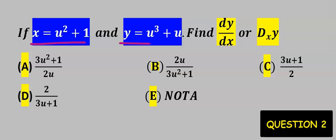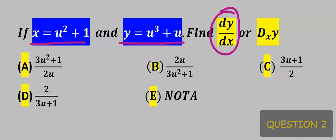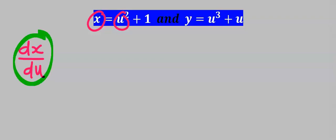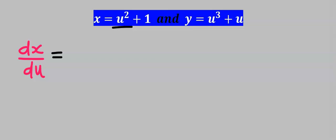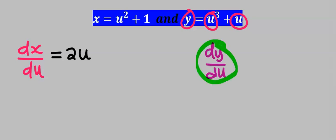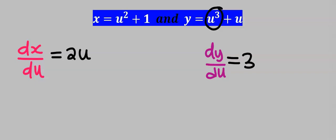Next we have two functions to find dy/dx. To solve this problem, let's consider the first function: this is x and this is u. Hence we are going to find dx/du. Differentiating u², we get 2u. Next differentiating 1 we get 0, so that term drops out. For the y function: this is y and this is u, so we find dy/du. Differentiating u³ gives 3u², and differentiating u gives 1.